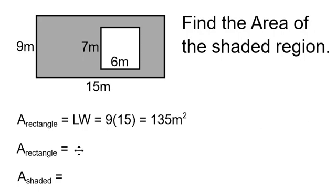The area of the smaller rectangle, we also are doing length times width. It's equal to 6 times 7, which is 42 meters squared.